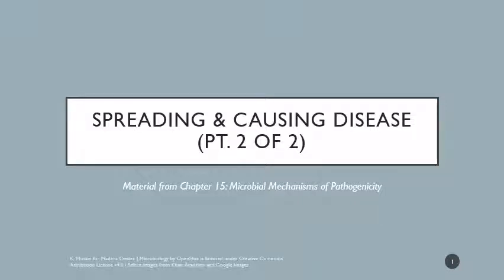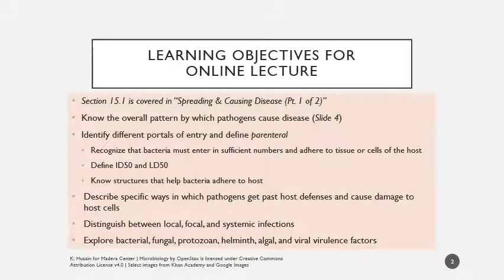This is the second online lecture for the week in which we were not on campus. They're both about spreading and causing disease — the first one was about epidemiology and how we broadly categorize different types of diseases, not getting to specific diseases, just how we approach studying them. This one is more about microbial mechanisms of pathogenicity: once a disease-causing organism is spread, how does it go about infecting its host and actually causing disease? Parts of this, specifically section 15.1, are covered in the first part of that lecture, but we're going to focus primarily on some other learning objectives.